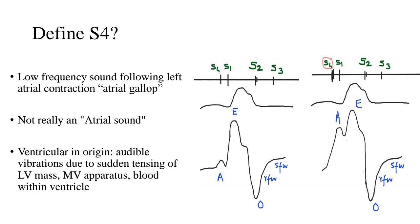So define S4. Now S4 is a low frequency sound which follows left atrial contraction. So in a way, it is what we call an atrial gallop. However, it is not really an atrial sound. Why is that? Because it's actually a ventricular origin sound.